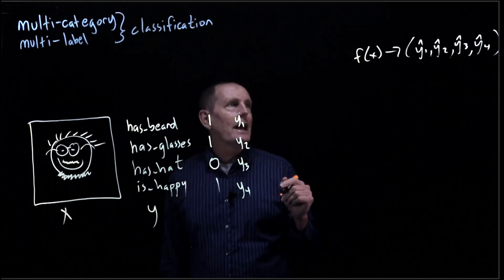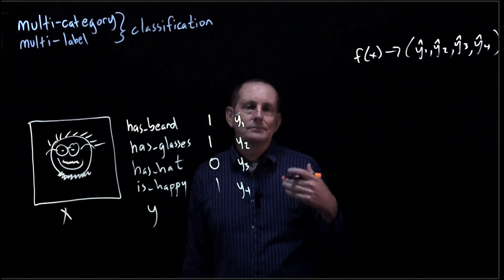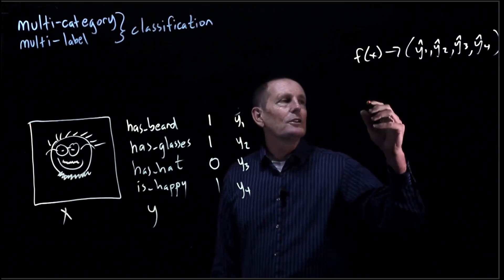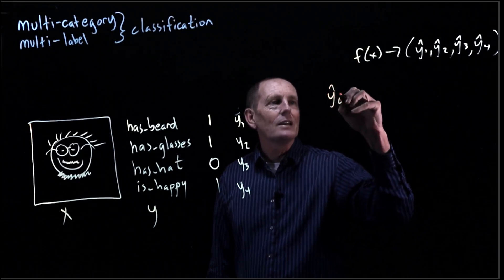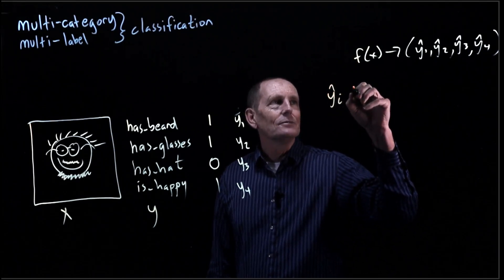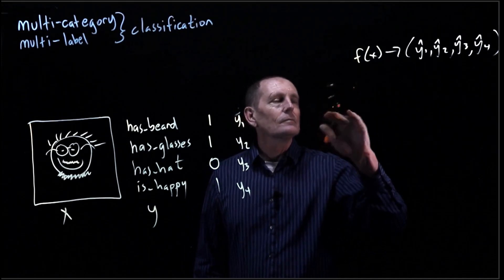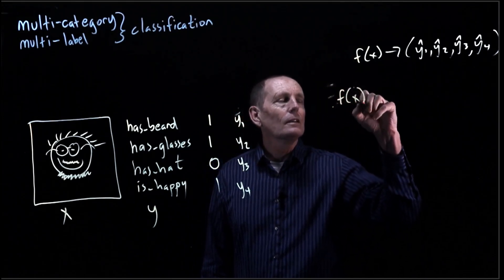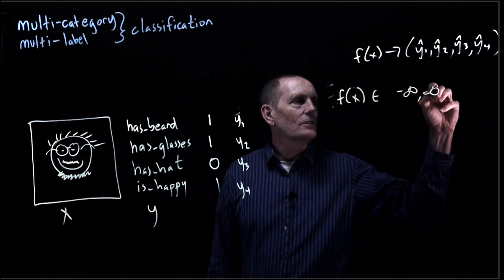So if we look at f, we might have a function, let's say if we have some polynomial, right? f might return values where each y hat sub i is, sorry, each f of x is in the range negative infinity to positive infinity.